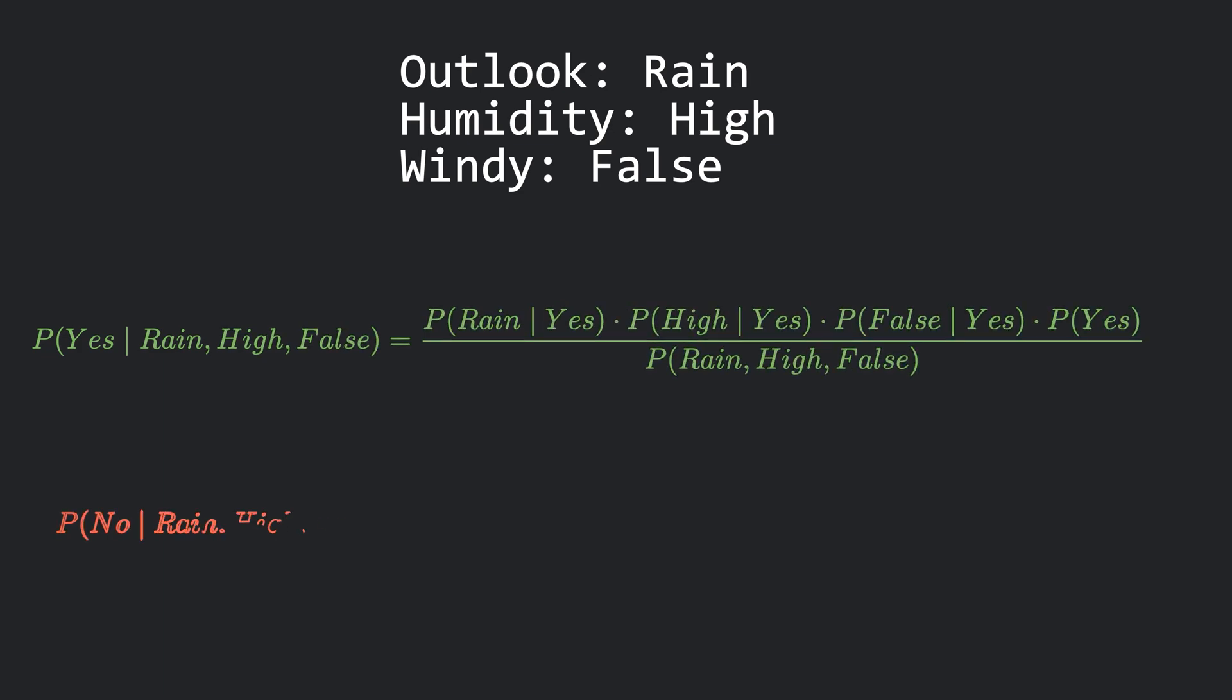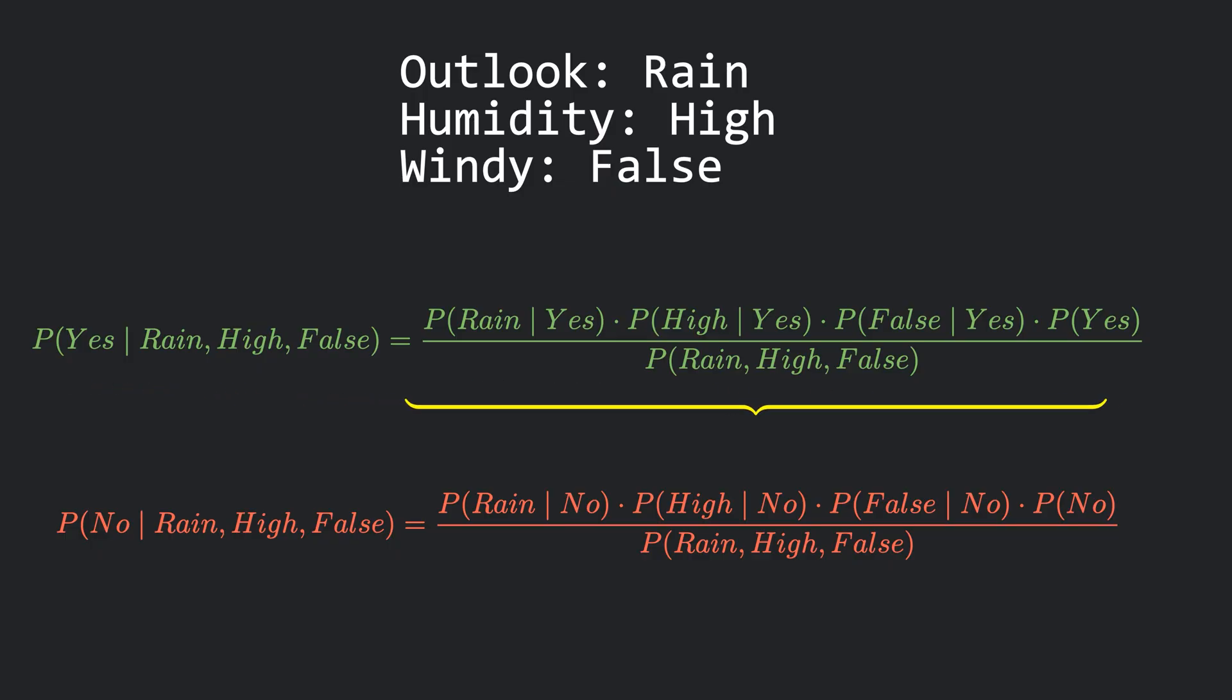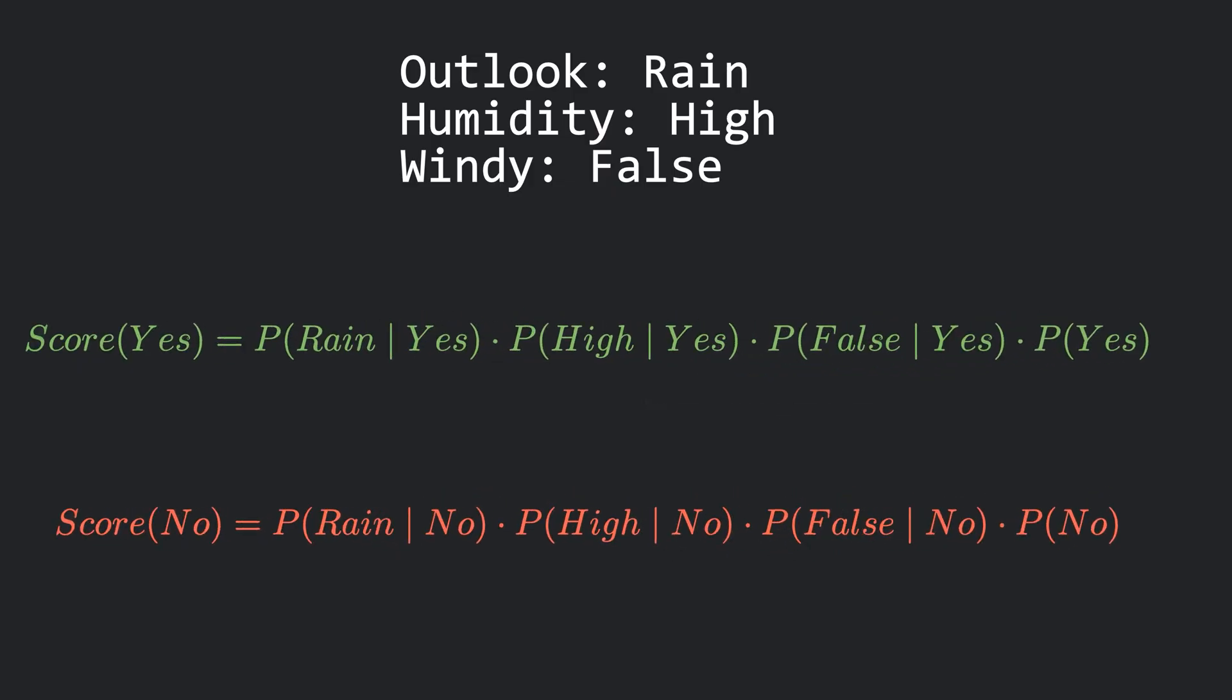We will use that naive Bayes formula to calculate both the probability of the event happening and the probability of the event not happening, and then we will compare the two. Whichever is higher would be our answer. But wait, these denominator terms are equal in both cases. So why not remove the denominator term and save some computational time, and let's call this new value a score rather than probabilities. Now we need to find these values in order to calculate the scores. Now let's see how to find these.